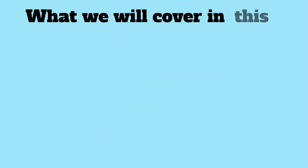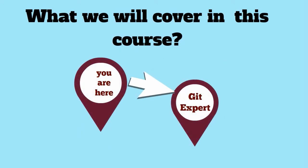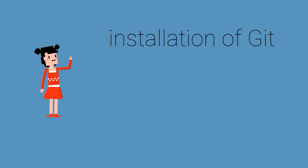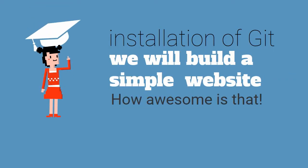What will we cover in this course? We will cover everything you need to know for your day-to-day activities at work, and a lot more in depth about Git. We will start with installation of Git on your machine, then jump to building a simple website using HTML and CSS. As this website grows, we will learn about different parts of Git to maintain it.